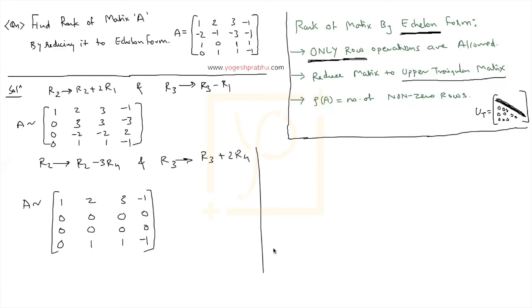So if I do, I'll continue writing here on the right hand side. If I exchange R2 and R4, if I exchange second row and fourth row, then matrix A will become...